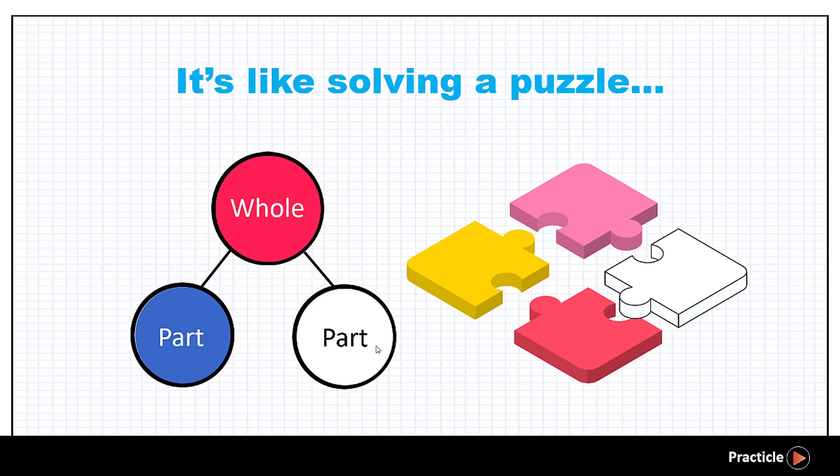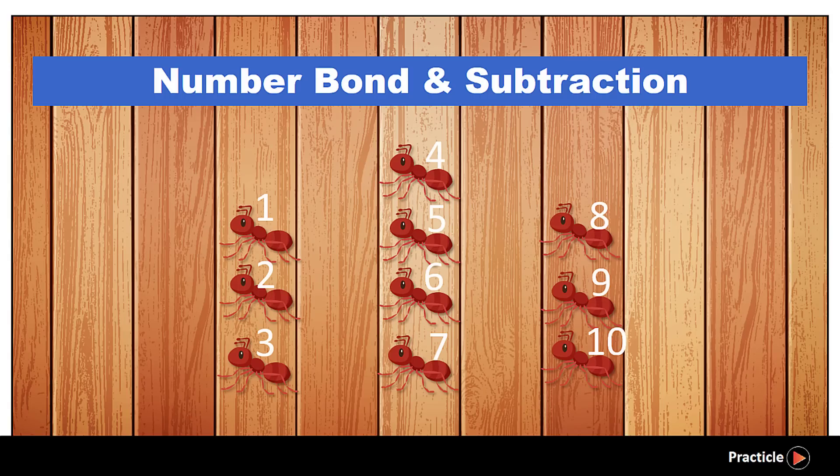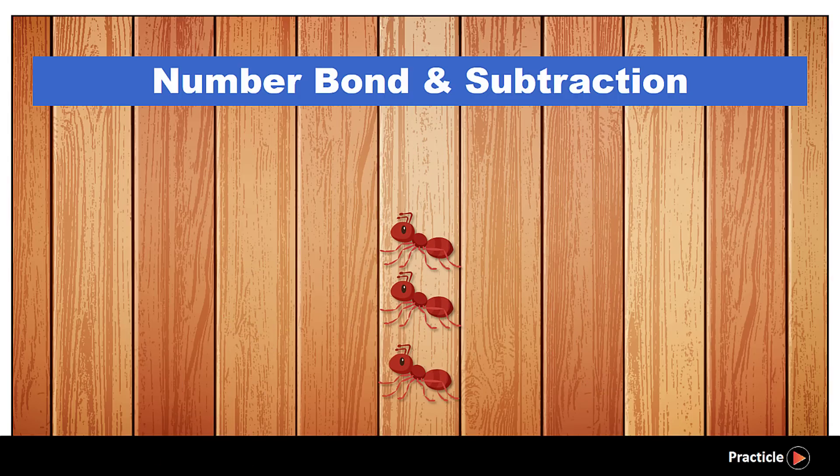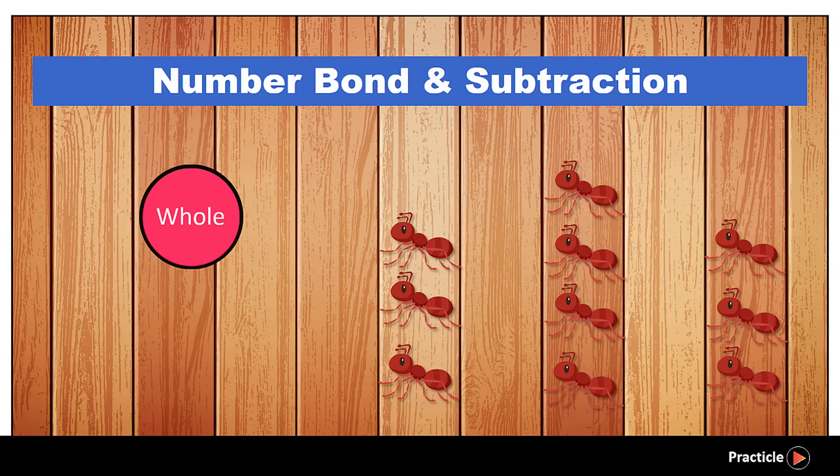Now let's see how number bonds help us with subtraction in this example. Say we have 10 ants on the table. Eww! And we got rid of 7 ants by sweeping them away. Do you know how many ants are still on the table? As you can see, this time round, instead of starting off with parts, we started off with a whole, correct?